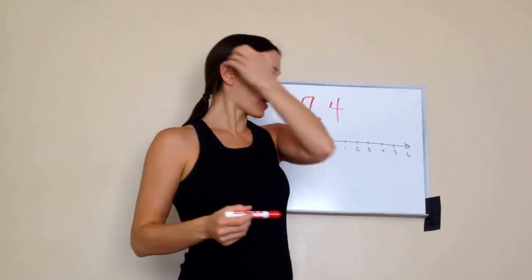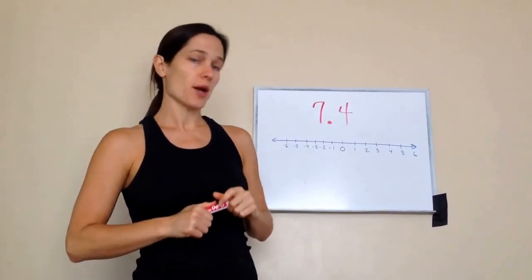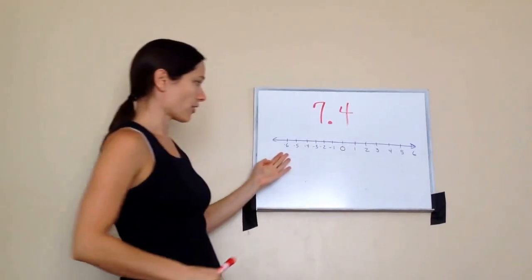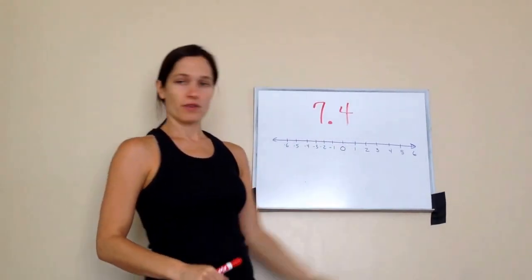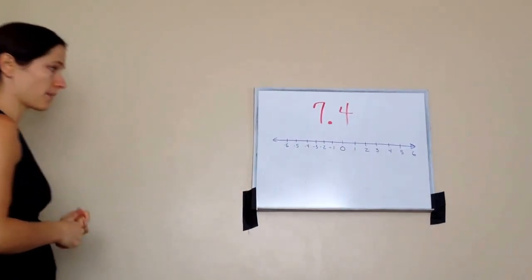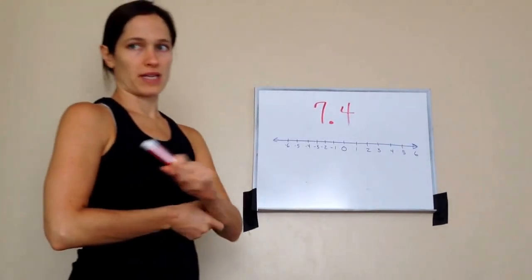Okay, this is 7th grade lesson 4. It's on the number line. And as you can see, I've already written a number line up here. If you would like to do that on your paper, you may, but it would probably be best just to watch.